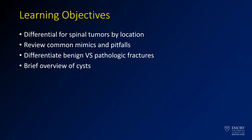What we're going to talk about today is making a differential diagnosis for spine tumors by location — helping decide what your differential is based on where you think the tumor is coming from. We'll look at some common mimics and pitfalls, talk about benign versus pathologic fractures, and discuss cystic lesions. Even though they're not tumors per se, they're mass-like and can often mimic tumors.